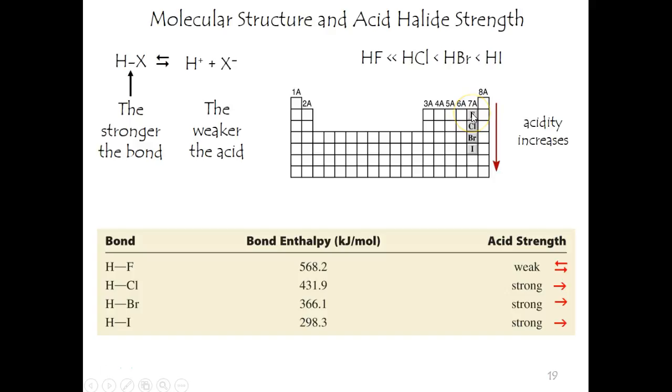And if it's a more electronegative ion, it's going to hold on tighter to that common cation, which is H+. So that's the rationale for the acidity increasing as you go down the column.